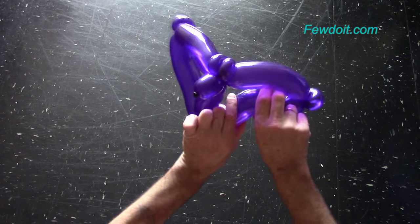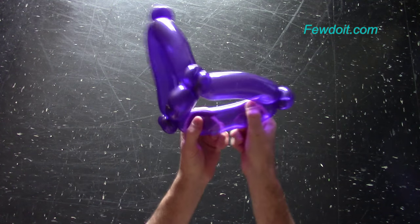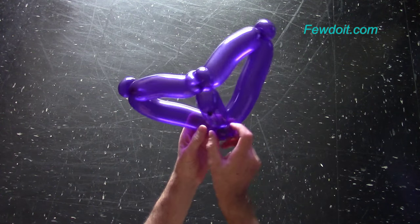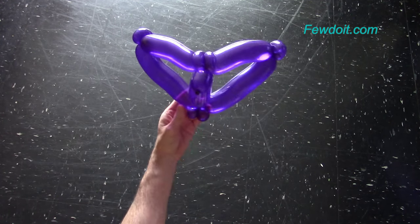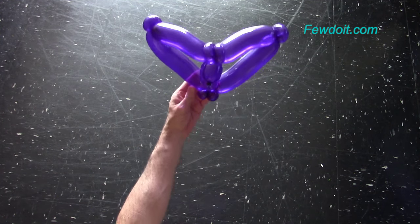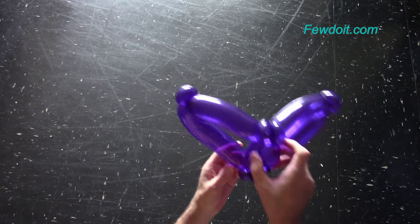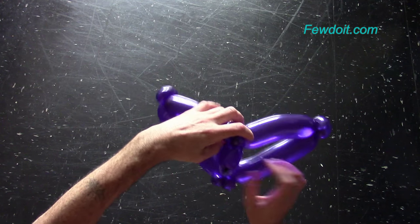In this example I use purple balloon to make the bat. We can use different color balloons to make different kinds of bats. Black, grey, brown. It is Halloween season. We can use orange or red balloons to make vampire bats.